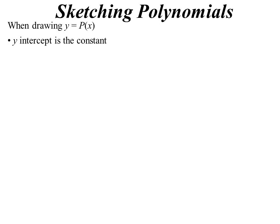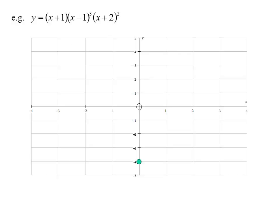The y-intercept is of course the constant, same as in the linear function. So if I've got something like this, I don't need to expand the whole thing out, I just look at the constant in each of those. I've got 1 times negative 1 cubed, which is negative 1, times 2 squared. We're up to negative 4. We can plot that in.